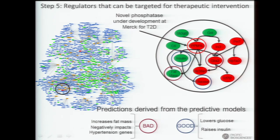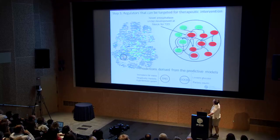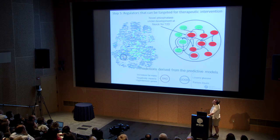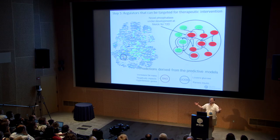Once we have this probabilistic causal network, we can, via simulation, go through and hit each of those nodes in silico — do the in silico knockdown experiment and see which ones are modulating the activity of that network in the most significant ways. One gene we come up with is this novel phosphatase gene. If you're downregulated in red, upregulated in green in our network, the predictions show that if we downregulate PPM1L, we will treat type 2 diabetes because we'll raise insulin levels and lower glucose levels. But we're also going to raise fat mass and start affecting genes known to affect hypertension — in the wrong direction.